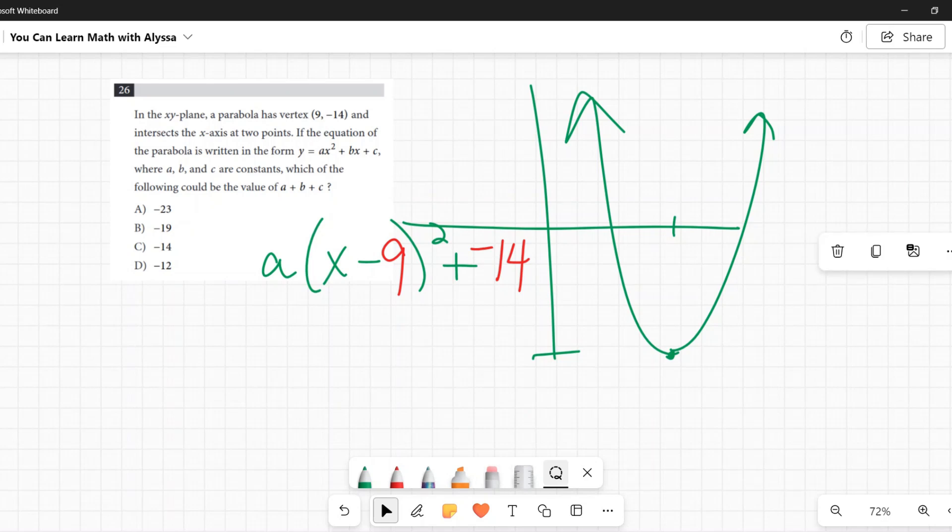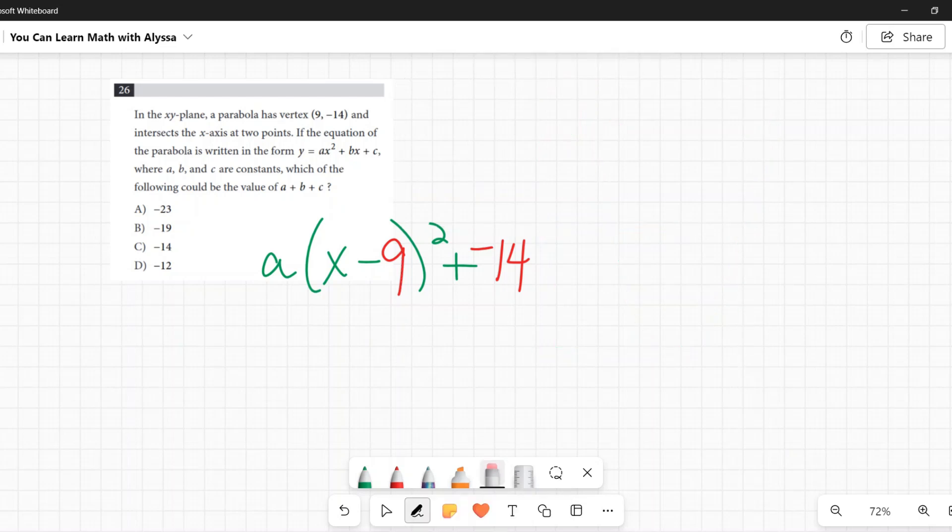And I'm going to erase this. We'll come back to it in a bit, this kind of idea of what the parabola is. But I'm just going to put a little sketch. So just remember that our parabola goes down and it goes up. So vertex is down here and it's opening up. Keep that idea in mind.